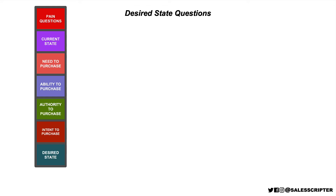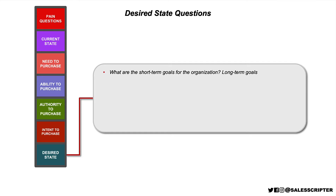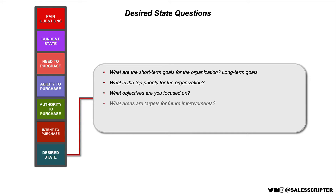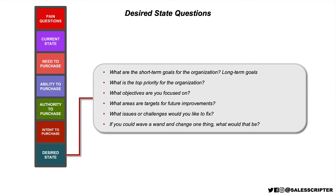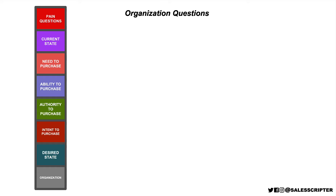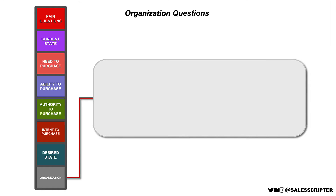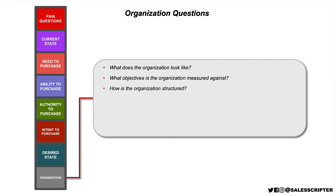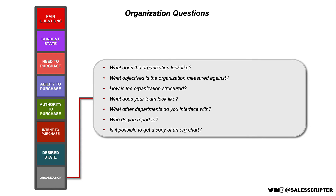Two additional bonus categories of questions: First, desired state questions — these help you identify what direction the prospect wants to go. What are the short-term and long-term goals for the organization? What is the top priority? What objectives are you focused on? What areas are targets for future improvements? If you could wave a wand and change one thing, what would that be? Second, organization questions — these help you understand the landscape. Who are the people in the organization? What objectives is the organization measured against? How is it structured? What does your team look like? What other departments do you interface with? Who do you report to? Is it possible to get a copy of an org chart?